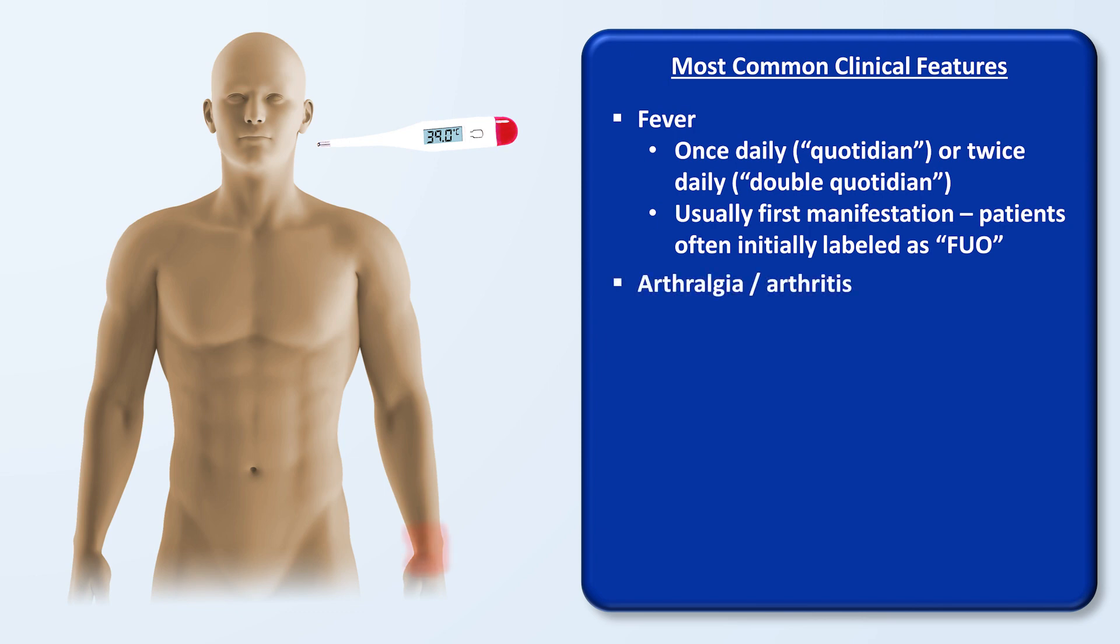Arthritis and arthralgias are another very common feature. They begin as oligoarticular, meaning only affecting a small handful of joints, but in severe cases can result in a diffuse polyarticular arthritis. The most commonly affected joints are the knees, wrists, and ankles.